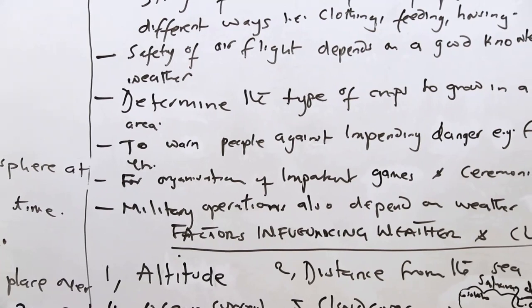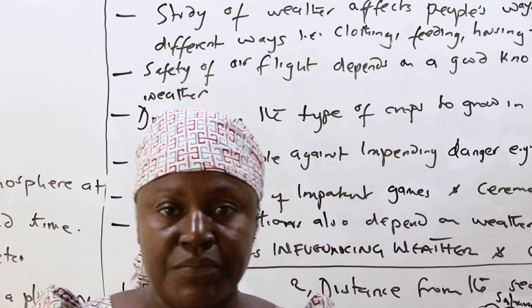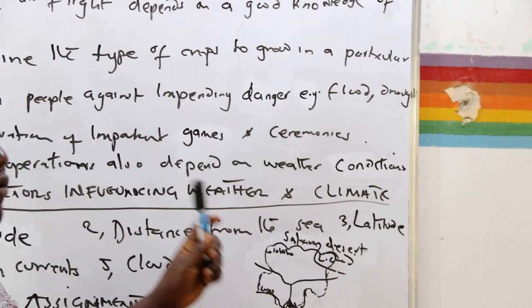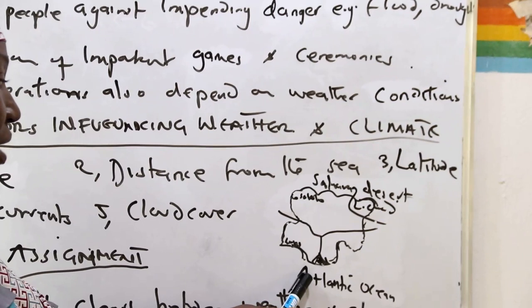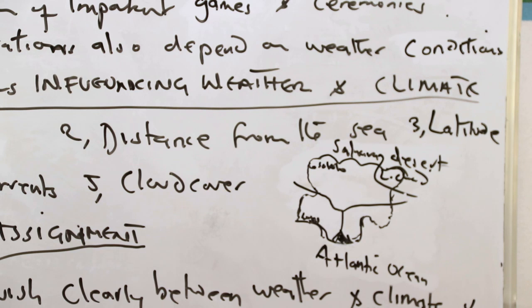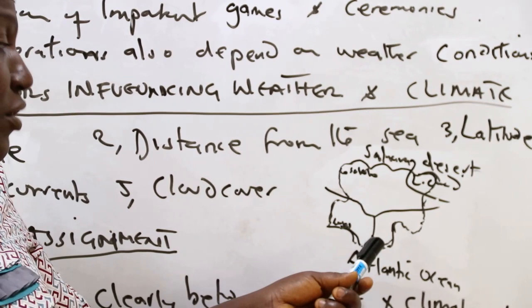The third major reason for studying weather and climate is to determine the type of crops to be grown in a particular area. Climate varies from one part of the world to another. For example, in Nigeria, the conditions from the northern parts to the southern parts vary greatly. The amount of rainfall received in the northern and southern parts of Nigeria varies greatly, and that affects the type of crops grown in these areas.